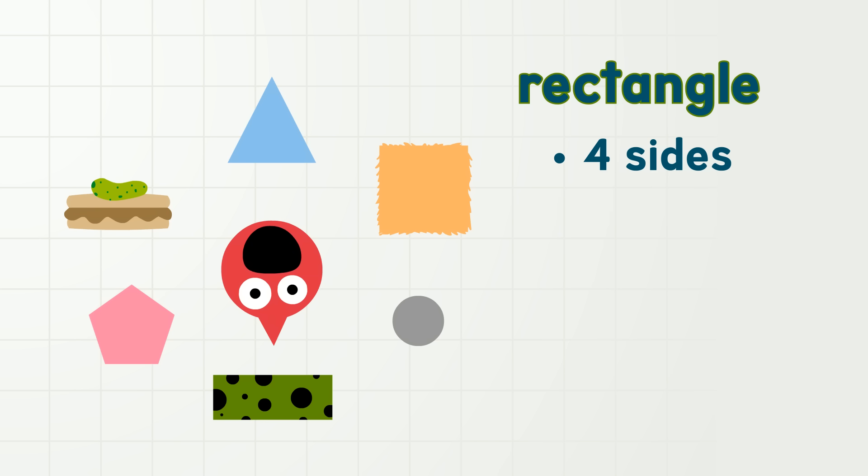Rectangle has four sides. One, two, three, four. But the sides are not all the same length. And rectangle has spots. Ha! Spots! Attributes!